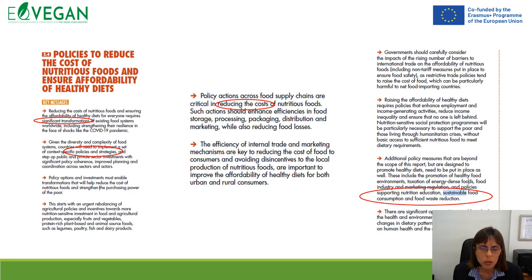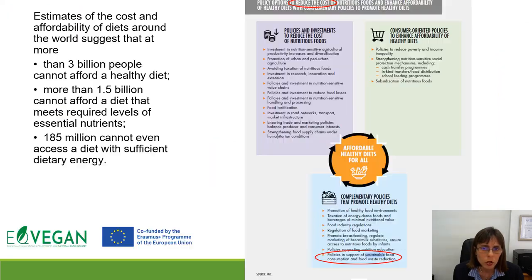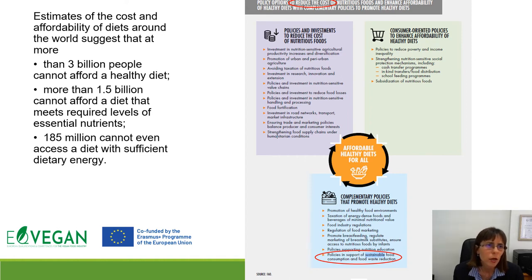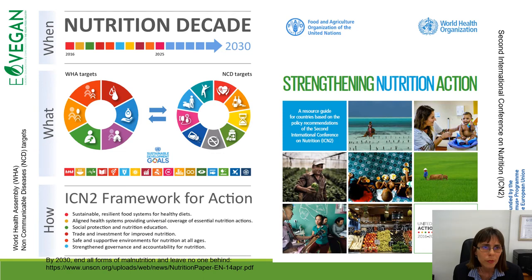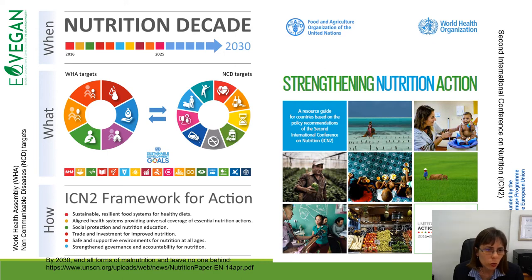We need to significantly transform policies and food systems, prepare strategies to reduce the cost of nutritious food, and aim for sustainable food systems to ensure sustainable food consumption and food waste reduction. It is estimated that more than 3 billion people cannot afford a healthy diet, and more than 1.5 billion cannot afford a diet that meets the required levels of essential nutrients.